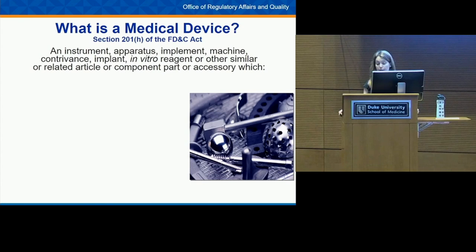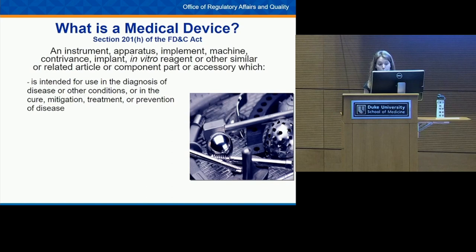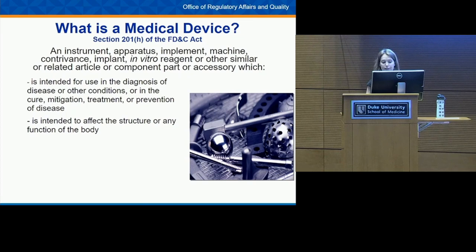What is a medical device? According to the Food, Drug, and Cosmetic Act, a medical device is an instrument, apparatus, implement, machine, contrivance, implant, in vitro reagent, or other similar or related article, component part, or accessory — it can basically be anything. It is intended for use in the diagnosis of disease or other conditions, or in the cure, mitigation, treatment, or prevention of disease, or intended to affect the structure or any function of the body. Up to this point, the definition is very similar to a drug.